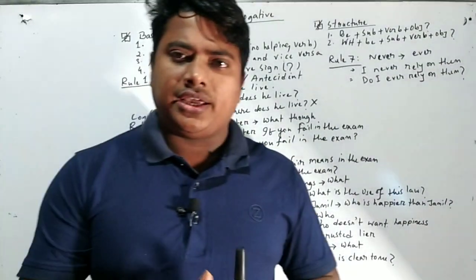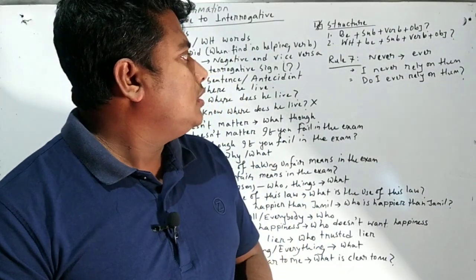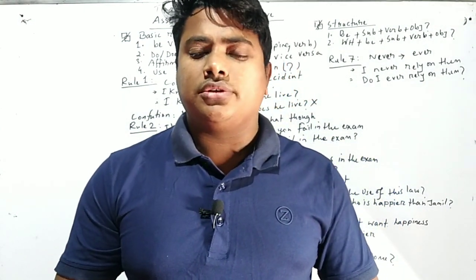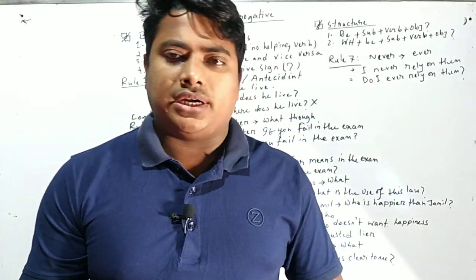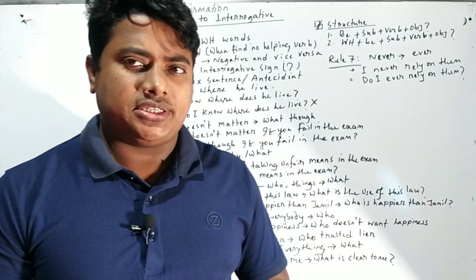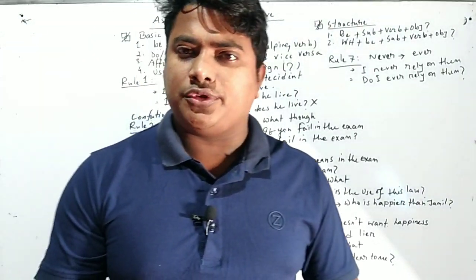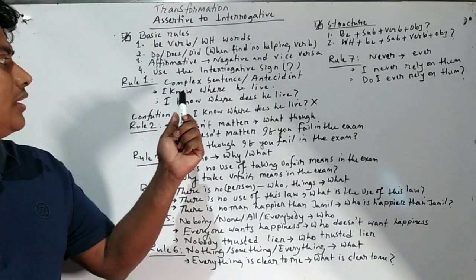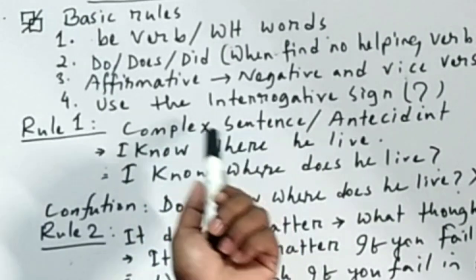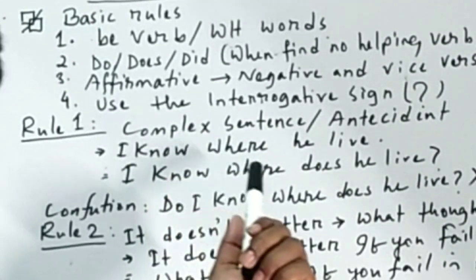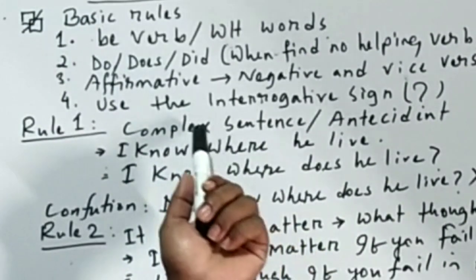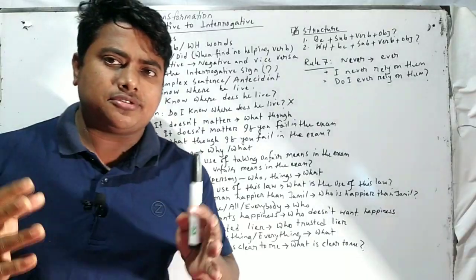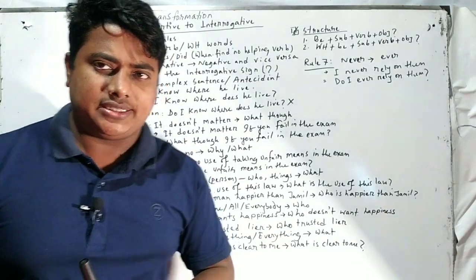Here I include seven common and uncommon rules that help you learn how to change sentences from assertive to interrogative. The first rule involves complex sentences or antecedent-related sentences.